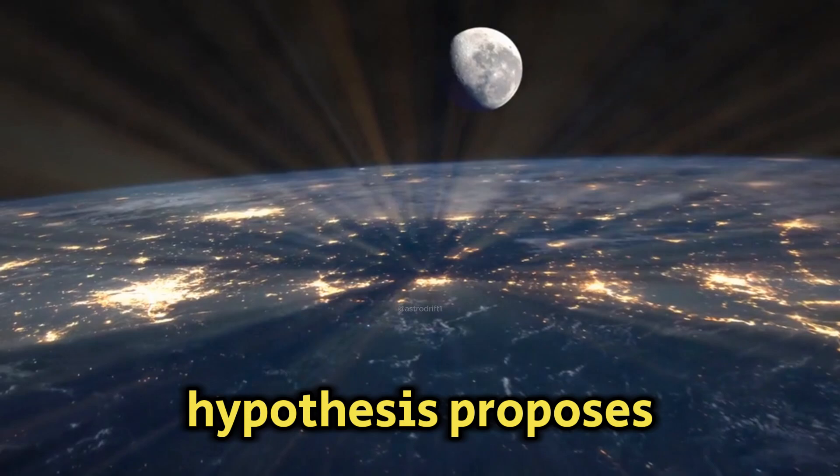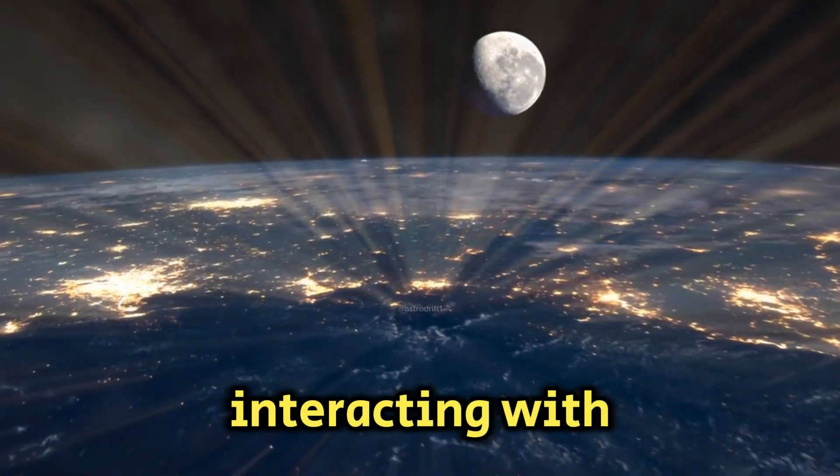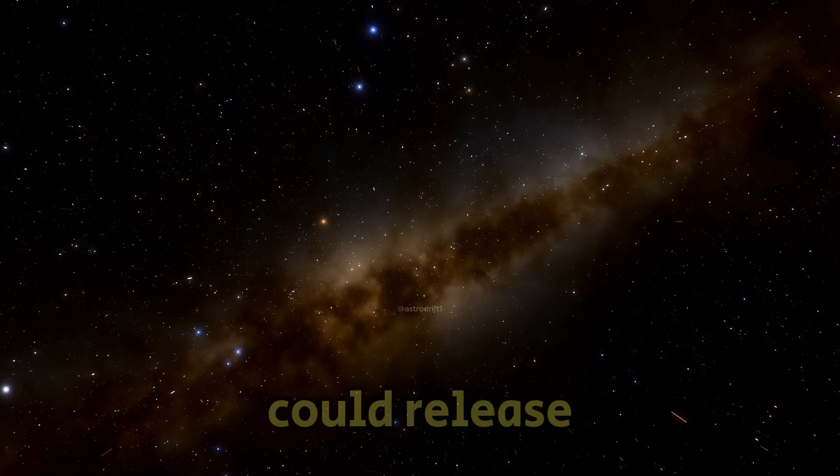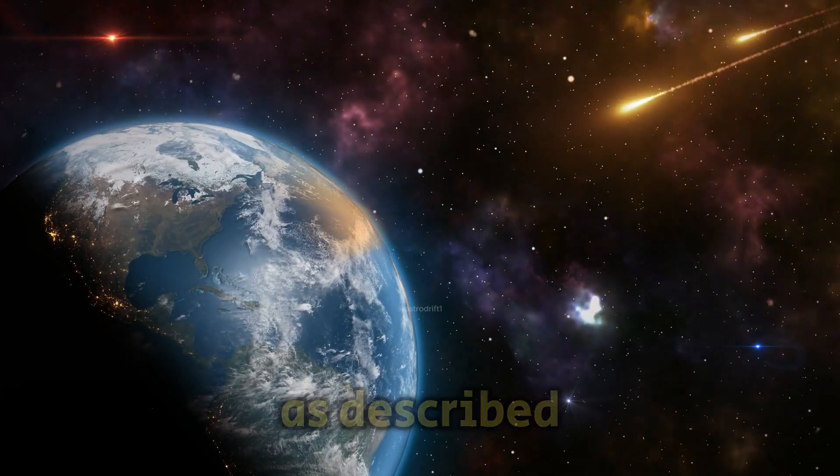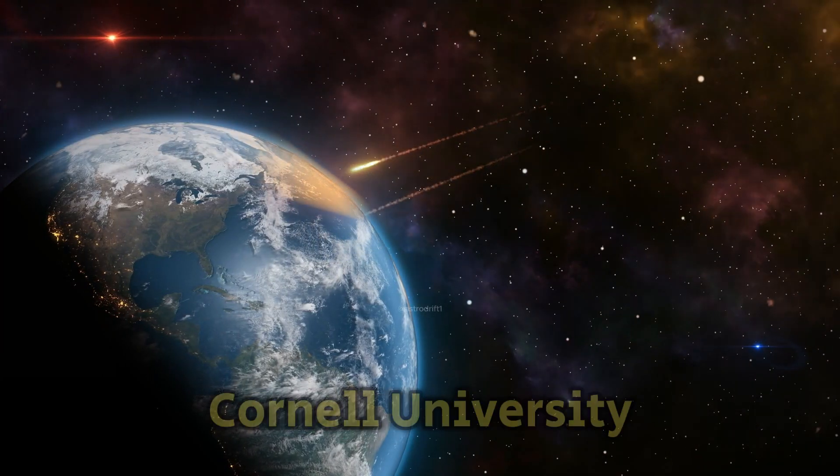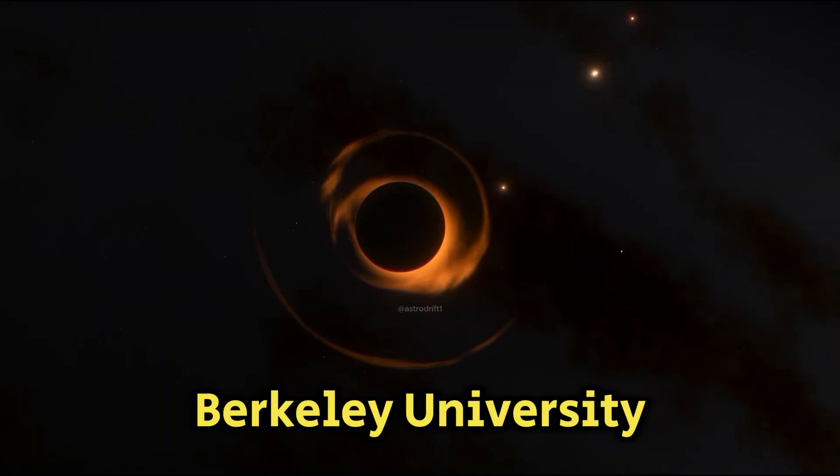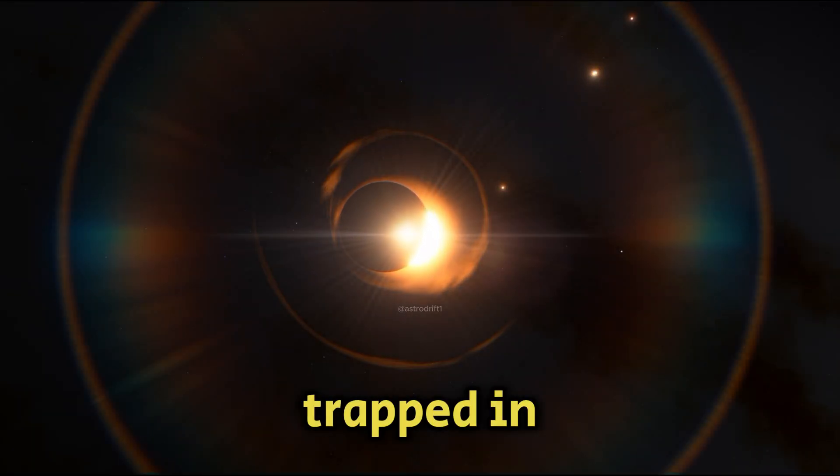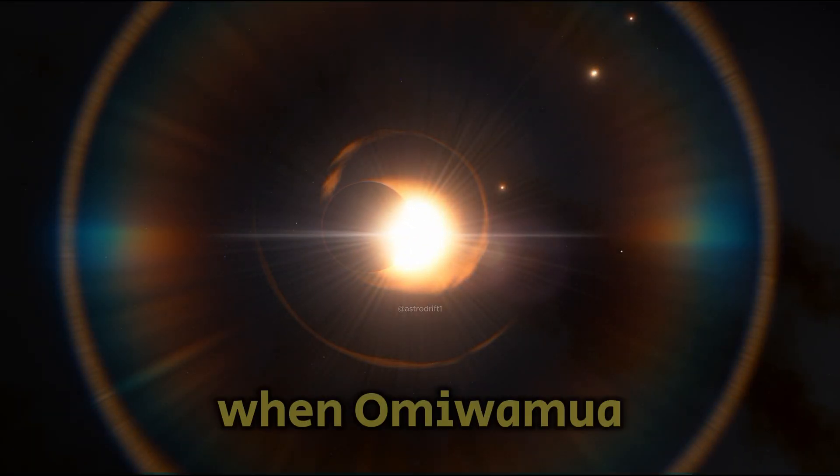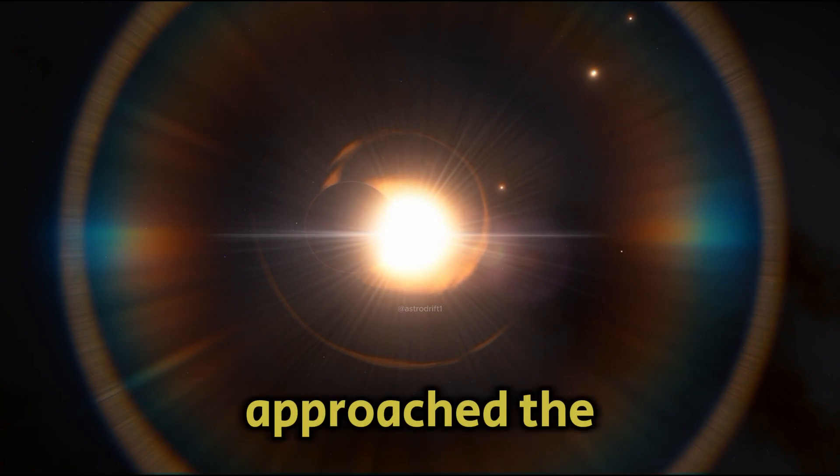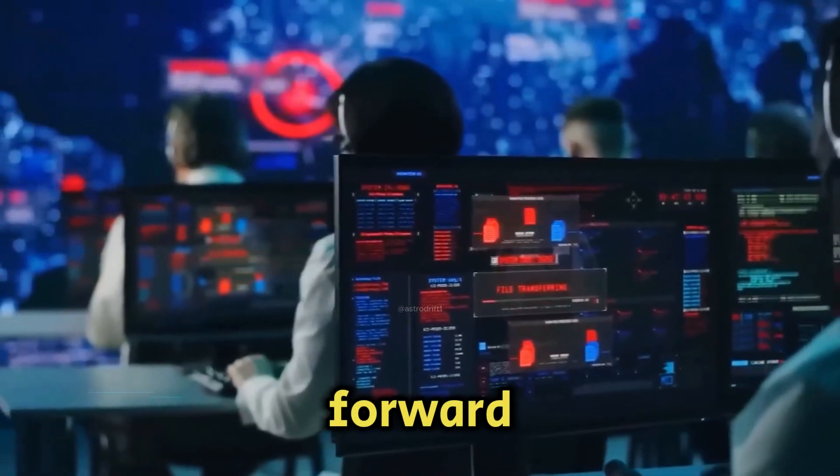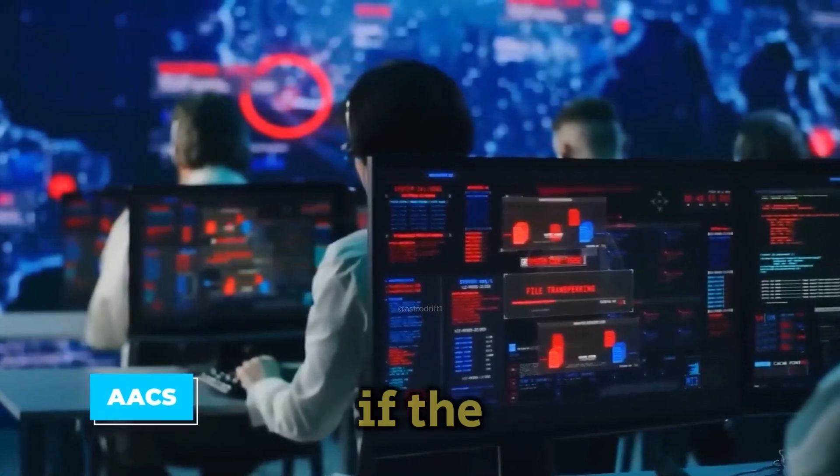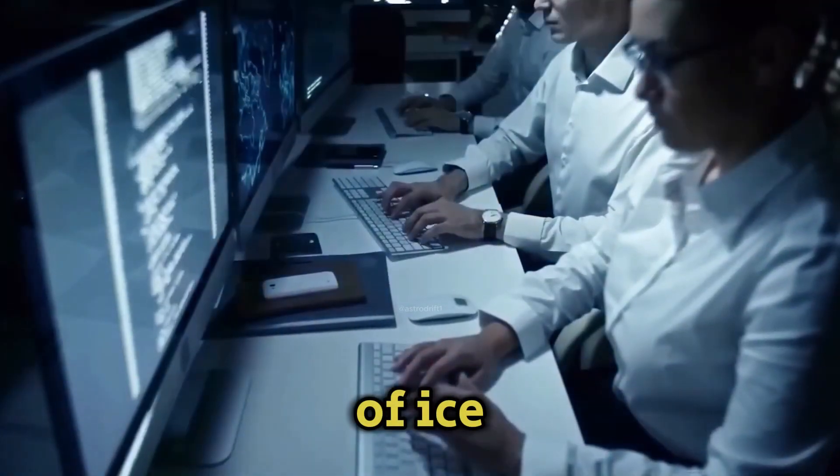A different hypothesis proposes that cosmic rays interacting with surface ice in interstellar space could release hydrogen gas trapped in water molecules. This process, as described by Daryl Seligman from Cornell University and Jennifer Bergner from Berkeley University, would create hydrogen gas trapped in amorphous water ice. When Oumuamua warmed up as it approached the Sun, the structure of the ice could have changed, propelling it forward. This theory would only be valid if the object were indeed made of ice.